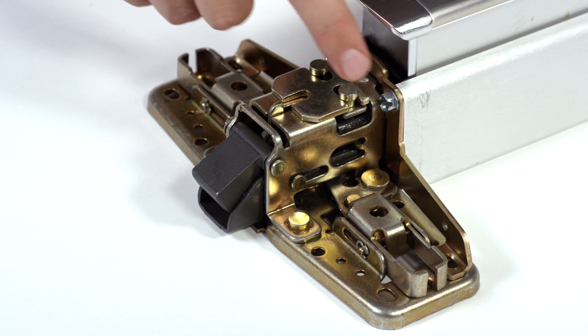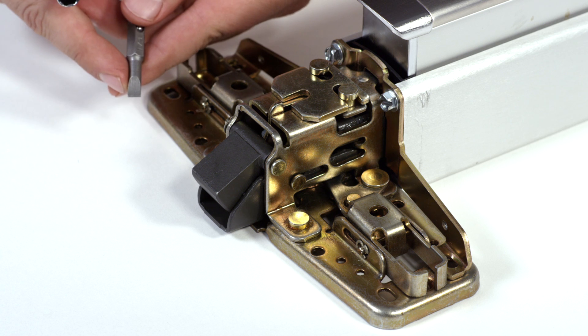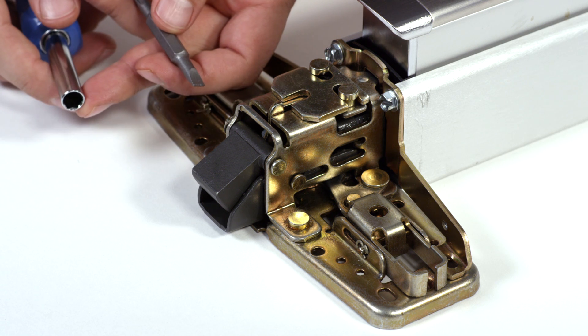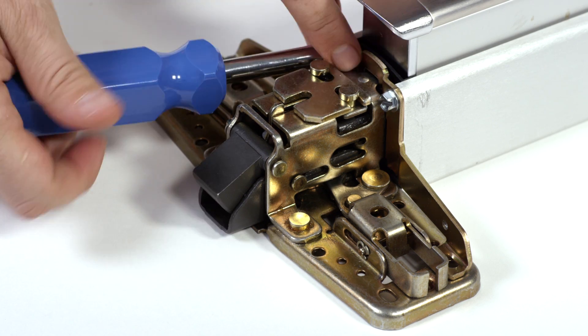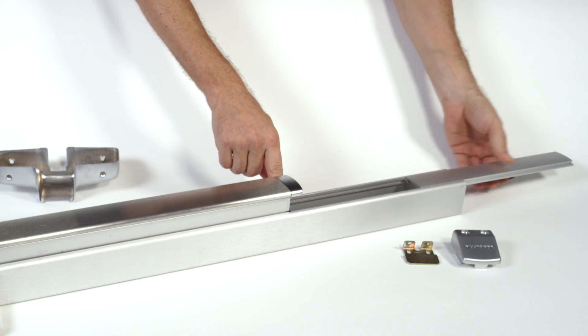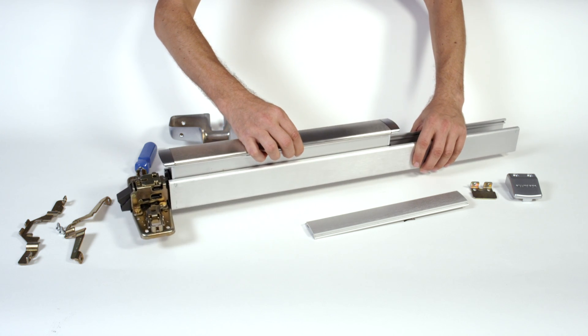Next, remove the two base plate screws using a flat screwdriver or an 8 mm socket wrench included in our 6-in-1 Schlag screwdriver. Slide the mechanism cover off, then slide the mechanism case off.